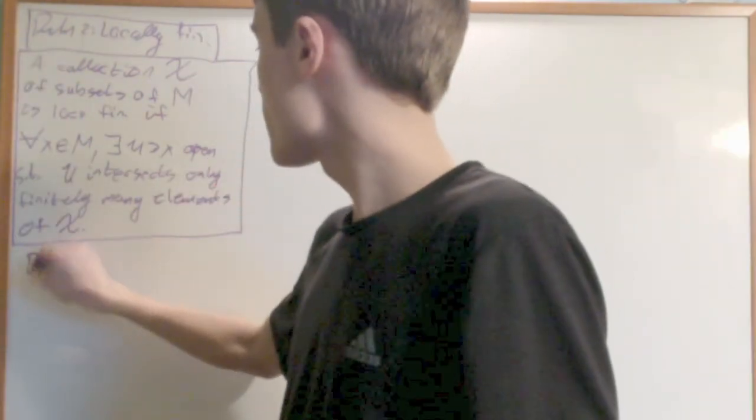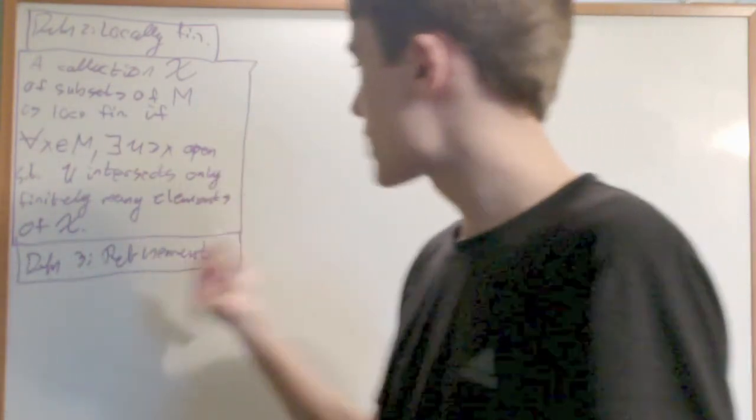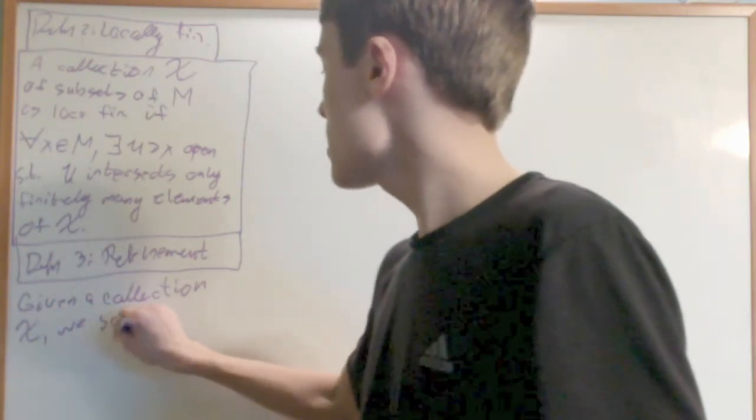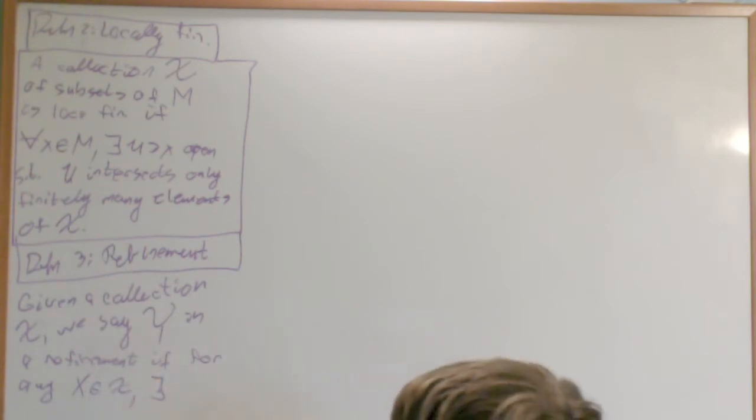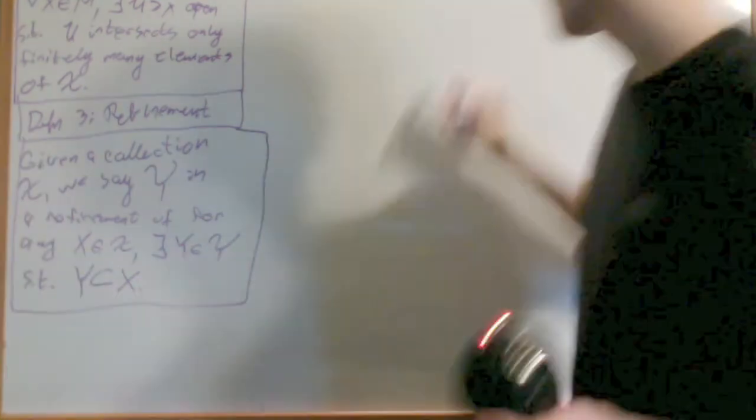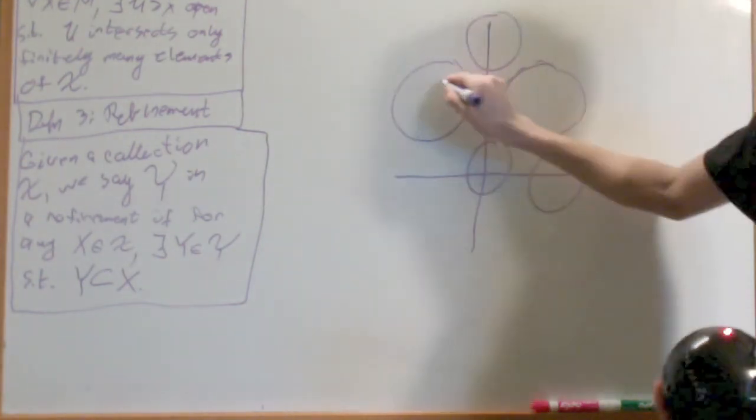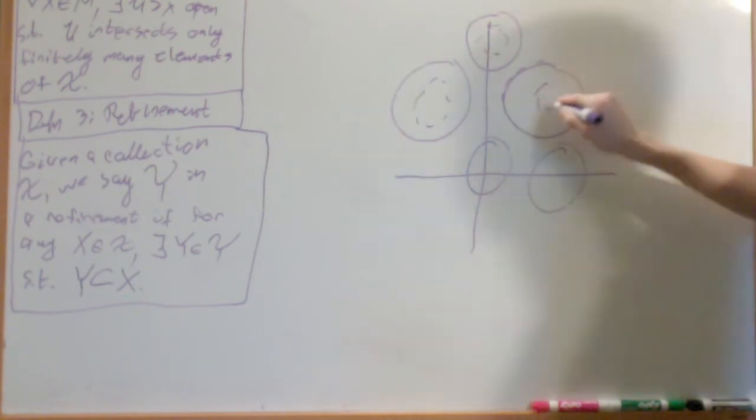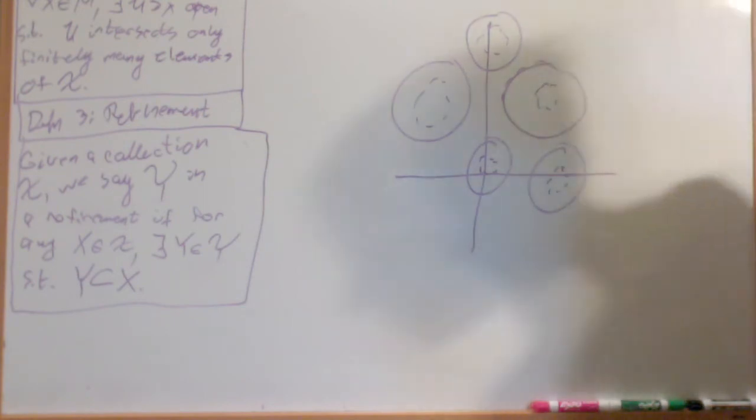And now another definition, definition three, is going to be of refinement. So given a collection X, we say that Y is a refinement if for any x in X there exists a y in Y such that y is a subset of x. So say I have this collection of subsets. A refinement would be like this. Just for each one of these, you just make it a little smaller. So you're refining it, you're making it smaller.